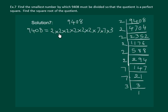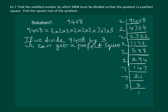Clearly, if we make pairs, there won't be a pair for 3. So 9408 is not a perfect square. That means, if we divide 9408 by 3, we can get a perfect square.